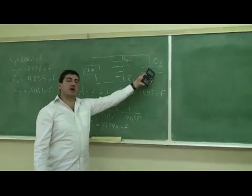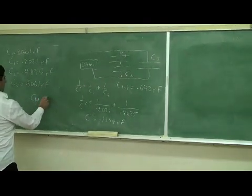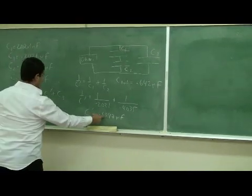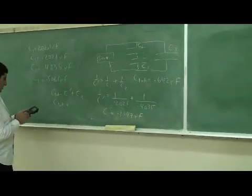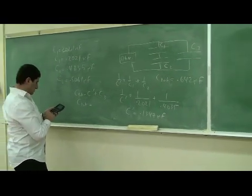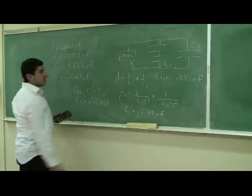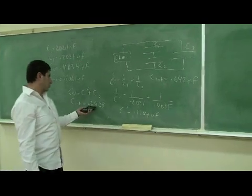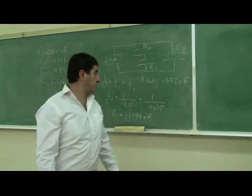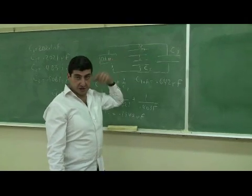And then that one is in parallel with that, so simply just add it. C total equals C prime plus C3. So take the answer there and add it to that. 0.6408 or 0.641. And the answer we got from the instrument was 0.642. So that's working. You could do all kinds of other combinations. You could include more capacitors if you wanted to.